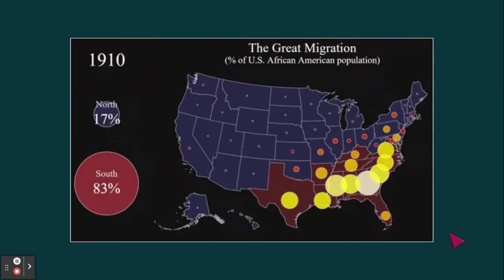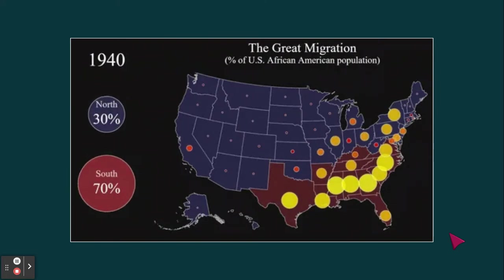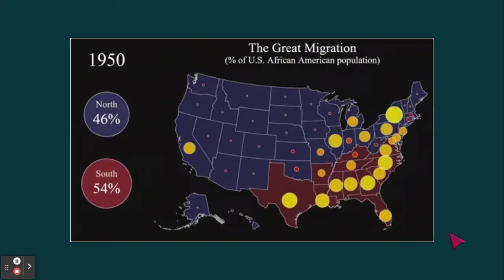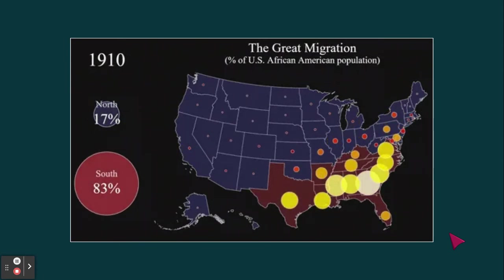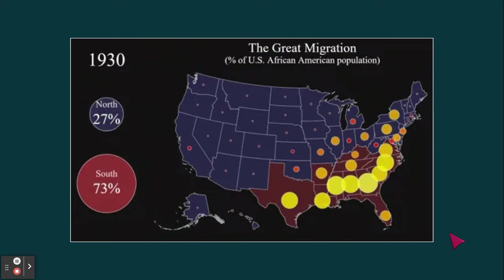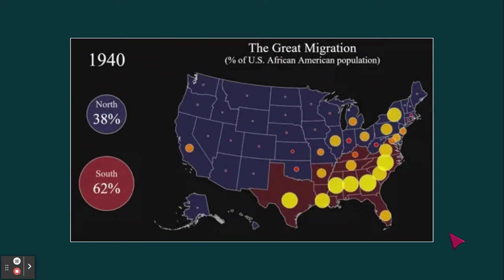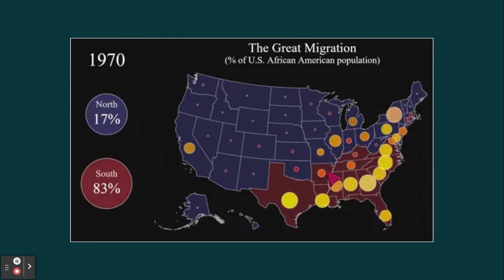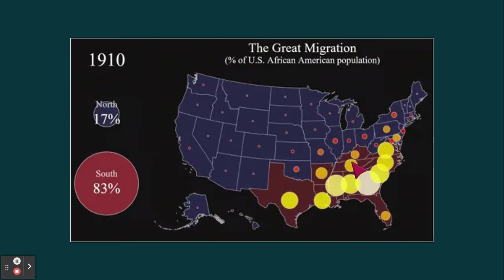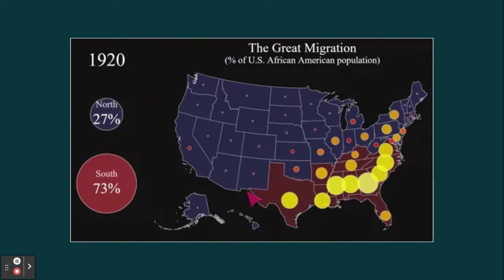This GIF starts in 1910 and shows how the population of African Americans in the south decreases over time while the population in the north increases over time — because during the Great Migration people were leaving the southern states and moving to the northern and western states.